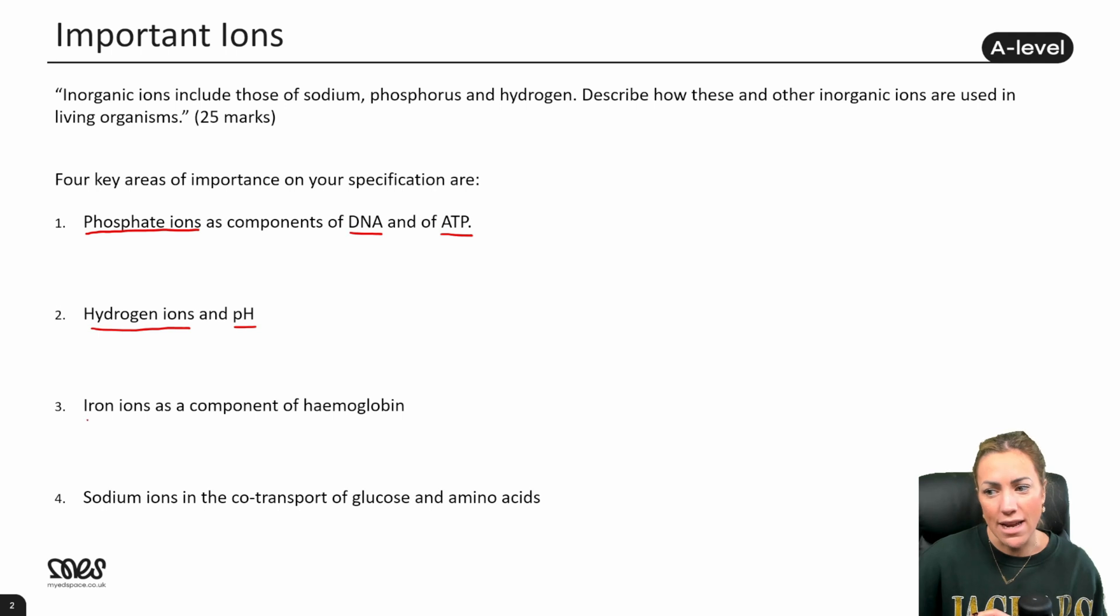The third area is iron ions. Now iron ions are found in hemoglobin, which you'll learn about in module three. Hemoglobin is obviously a protein with four polypeptide chains, but in each polypeptide chain there's a heme group. Each heme group contains an iron ion, and it's the iron ion that actually associates with oxygen. So we can say that hemoglobin loads with oxygen and then it dissociates and unloads the oxygen. So you could certainly focus on the importance of iron ions for oxygen carrying in hemoglobin.